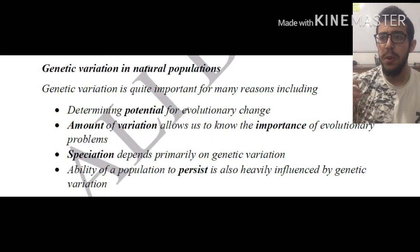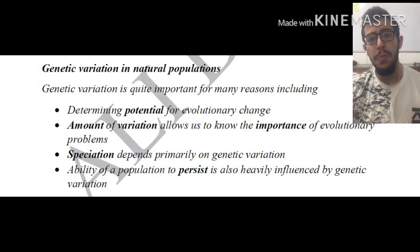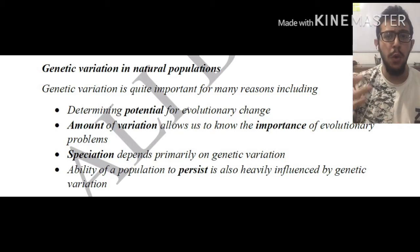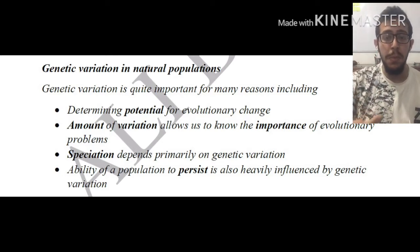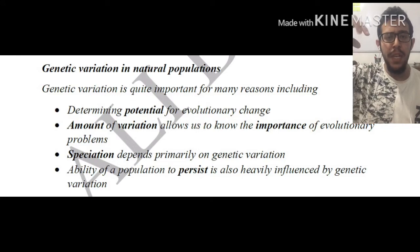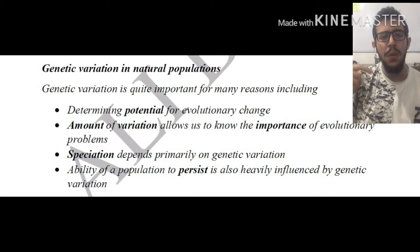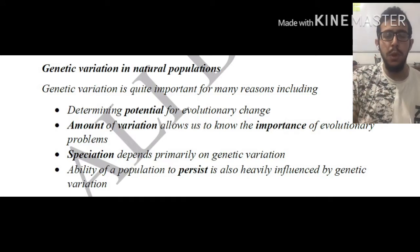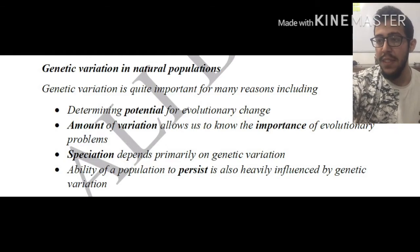The ability of a population to persist is also heavily influenced by genetic variation. For example, if a population could only survive in cold weather and the temperature changed drastically in a certain location, and if they were not genetically variable, all organisms in this population would die and the species in that geographical location would go extinct. Whereas if there was genetic variation, some would survive, continue to breed, and produce more offspring, continuing the species in that location.